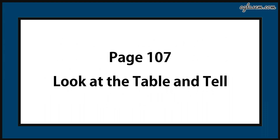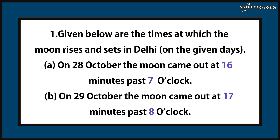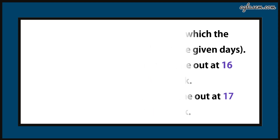Turn to page number 107, look at the table and tell. Question number 1: Given below are the times at which the moon rises and sets in Delhi. On 28th October, the moon comes out at 16 minutes past 7 o'clock. On 29th October, the moon comes out at 17 minutes past 8 o'clock.